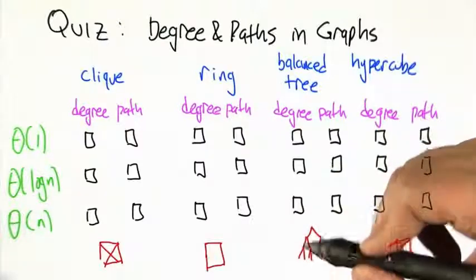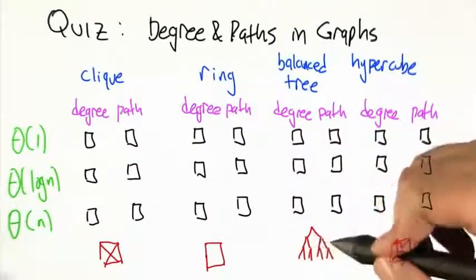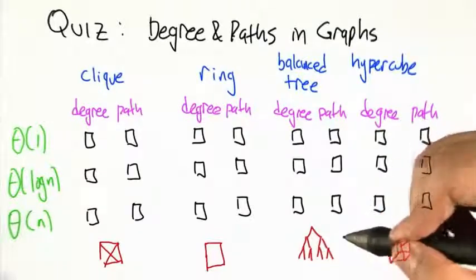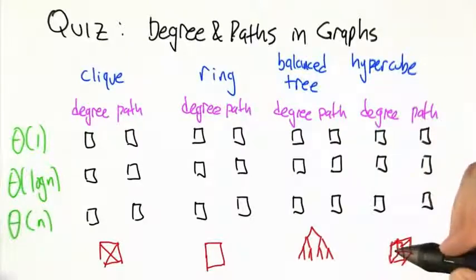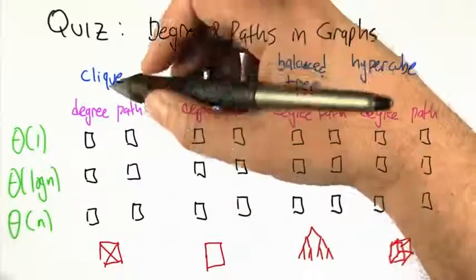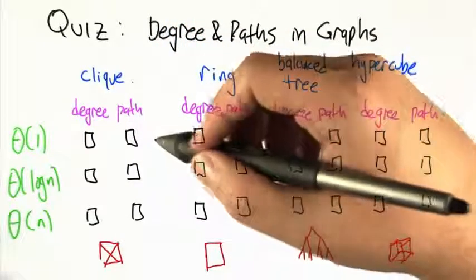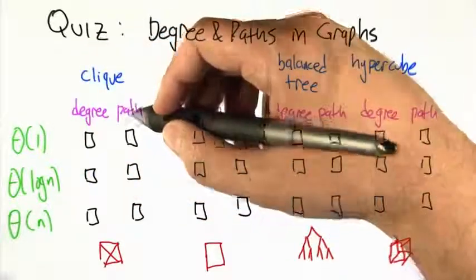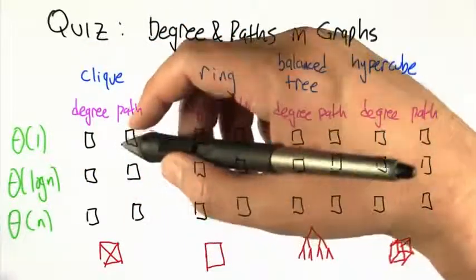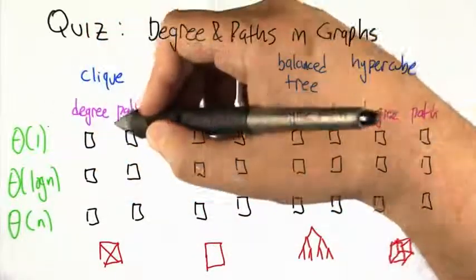A balanced tree, where you have a tree structure but there's a node that kind of separates the other nodes into these two different components that are about the same size. And a hypercube, like this three-dimensional hypercube. And what I'd like you to do is think about in an n-node version of that graph, what is the degree and what is the path length, the longest path length in the graph as a function of the number of nodes?